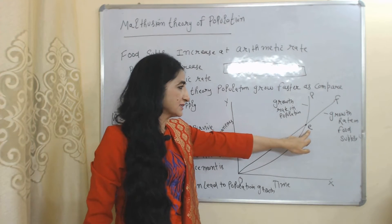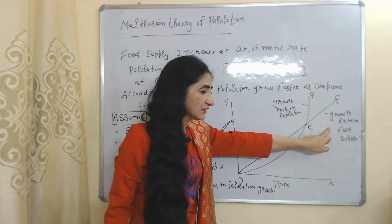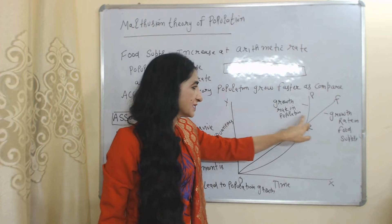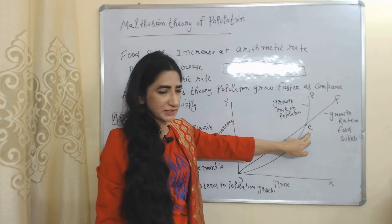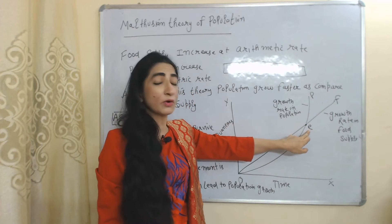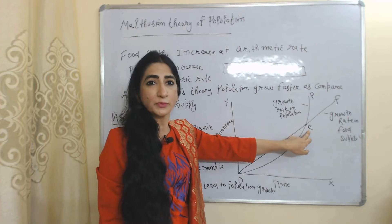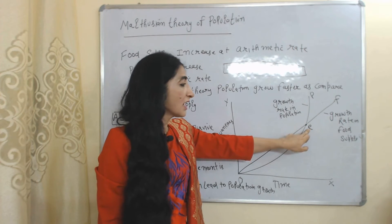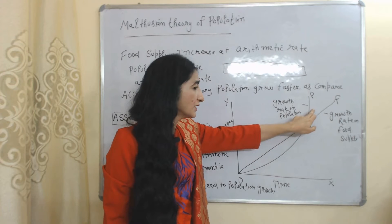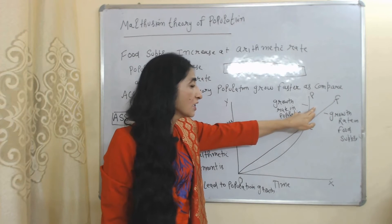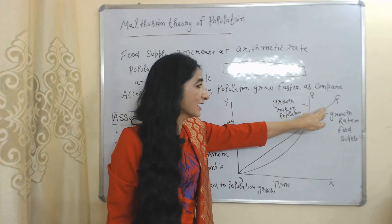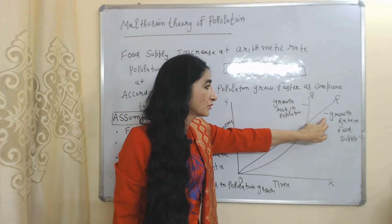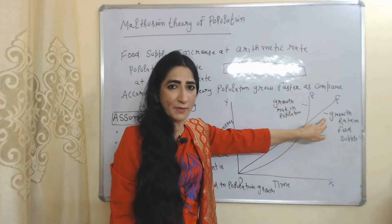At point E, the growth rate in food supply is equal to the growth rate in population. This will be called the crisis point, because after point E, population growth is higher compared to growth in food supply.